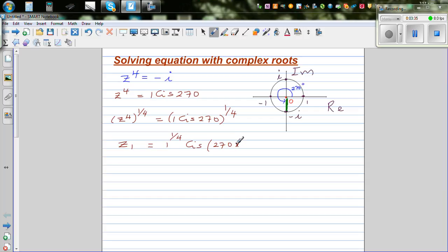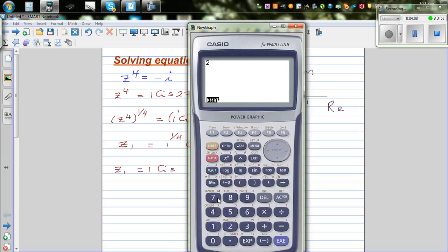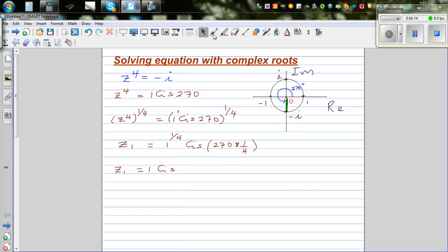So what you do is, De Moivre's theorem says that you multiply the modulus - this is the modulus or the radial distance - by the power. So you multiply this by this, 1 times 1 quarter is 1 quarter, and multiply the argument by this power. So z1, 1 raised to 1 quarter is 1, so this is 1 cis 270 divided by 4, which is 67.5. So the first root is 1 cis 67.5 degrees.